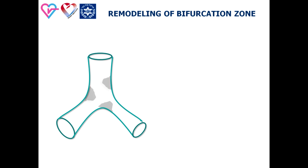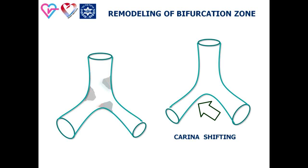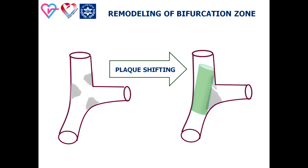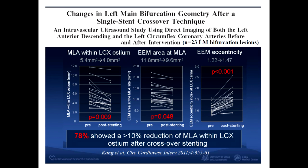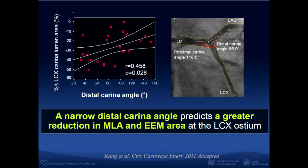Stent implantation in the distal left main suggests two possible mechanisms of remodeling at the confluence zone. The first is carina shifting. The second is plaque shifting. The majority of patients after stent implantation in a left main to LAD segment have reduction of the ostio-luminal diameter of the circumflex artery. A narrow distal carina angle between the LAD and circumflex arteries is an important predictor of circumflex compromise.